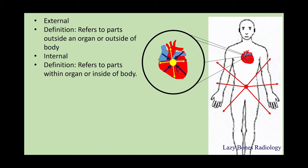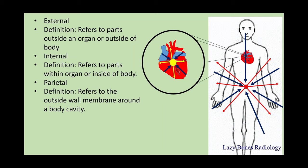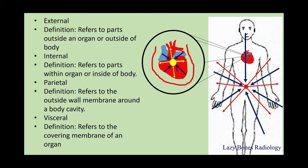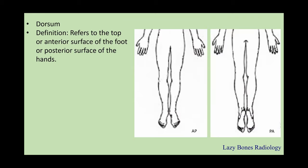Parietal refers to the outside wall or membrane around a body cavity. The heart is an important organ that has a parietal wall protecting it from the outside membranes of the body cavity. Visceral refers to the covering membrane of the organ itself. Not to confuse the two: visceral is the more intimate membrane covering the organ itself, while parietal is more like a protective wall on the outside.